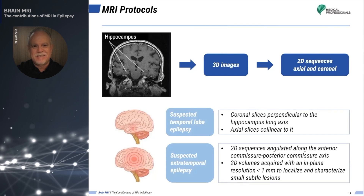For patients with suspected temporal lobe epilepsy, the 2D sequences should include axial and coronal imaging. The coronal slices should be angled perpendicular to the long axis of the hippocampus, and the axial slices should be in line with it. In cases of extratemporal epilepsy, the 2D imaging sequences should be angled along the anterior commissure–posterior commissure axis. Additionally, 2D volumes must be acquired with in-plane resolution of less than one millimeter to locate and characterize small and subtle lesions.